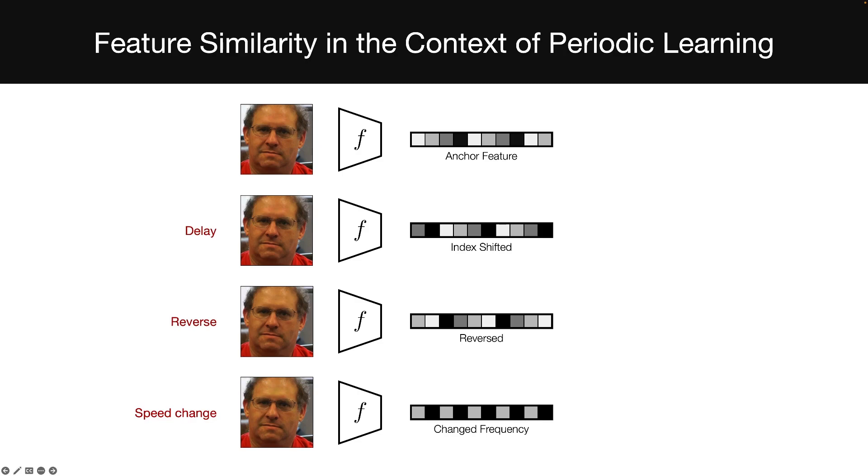By definition, we know that, no matter whether we introduce a small time delay, or reverse the sequence, the underlying heart rate of the person would not change. This indicates that a proper periodic feature similarity measure should induce high similarity for these features, and should also capture a continuous similarity change when the feature frequency varies.